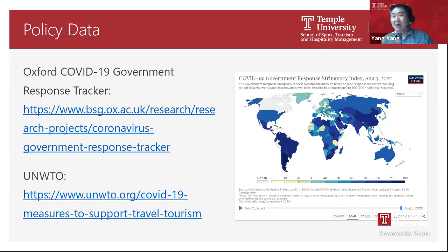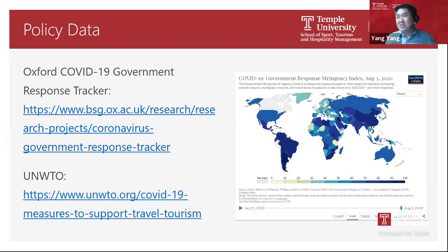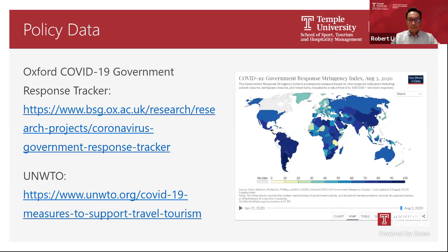The next type is policy data — anything about government policy. The first is the Oxford COVID-19 Government Response Tracker, which shows how governments respond to COVID-19 and provides a response stringency index updated every single day. You can download the raw data and sub-indices about policy from different aspects. Specific to tourism, there is a website from UNWTO that lists all measures from national and local governments to support the travel and tourism industry. That's another very useful dataset for government policy research.